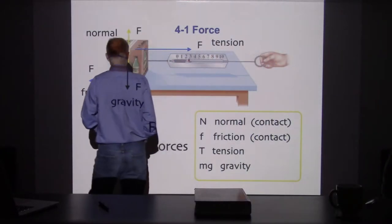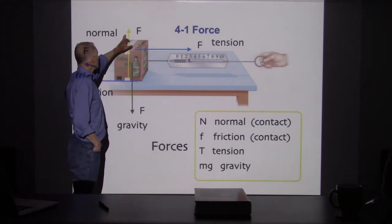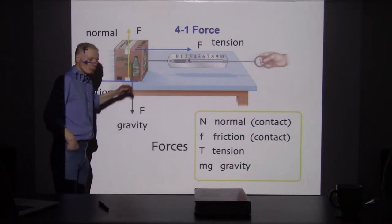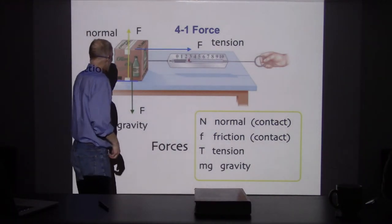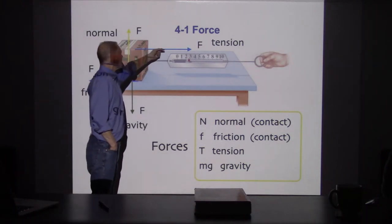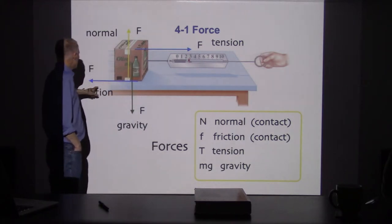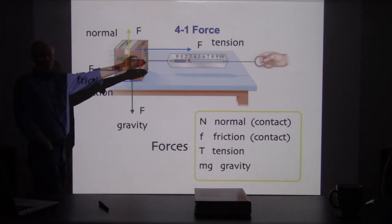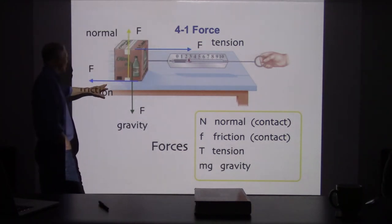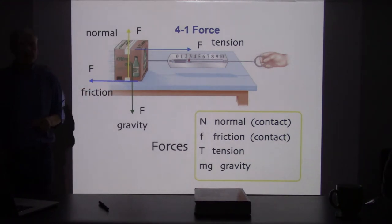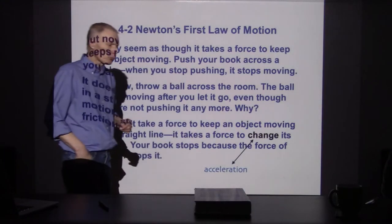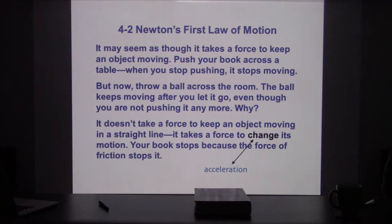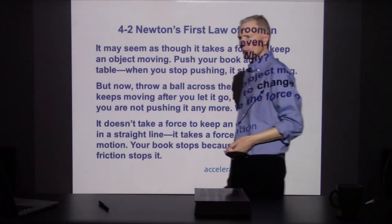We can determine how large the normal force is compared to the gravitational force — if the object is not accelerating vertically, the forces must be balanced. Along the horizontal direction, if the tension is larger than friction, the object accelerates forward; if less, it slows down. That's all according to the one formula I wrote and highlighted at the start. Those are examples of forces, and that's really where you start in this chapter: looking at forces and identifying what forces are acting on an object.